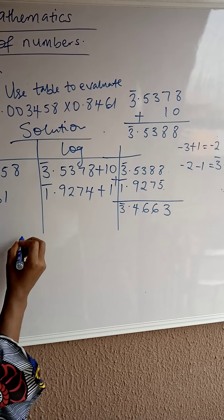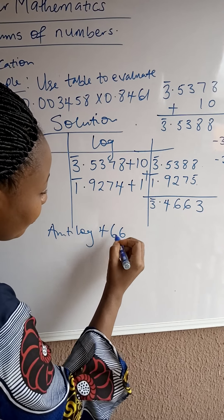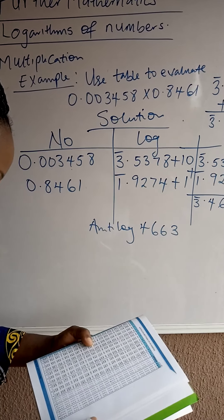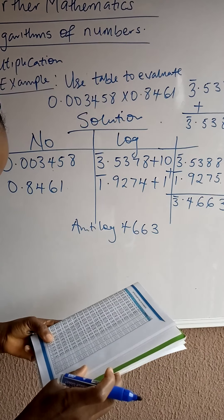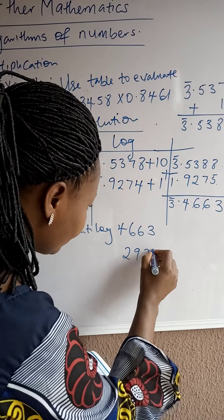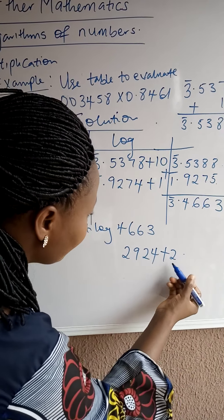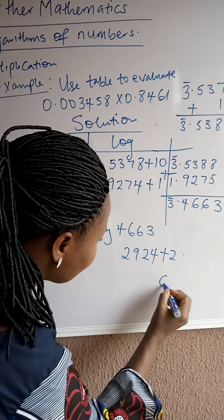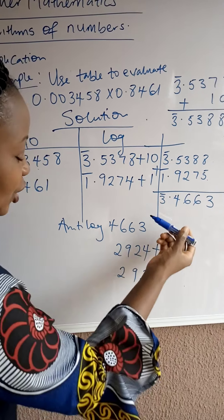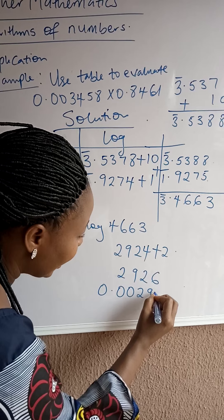Now, we are going to look for the antilog. Antilog of 466. 46 under 6 difference 3. And the antilog of 46 under 6 is 2924. Difference 3 is 2 plus 2. Then, it's going to be 4 plus 2. That's 6. Then, 2, 9, 2. Here, we are having bar 3 is going to be 0.002926.